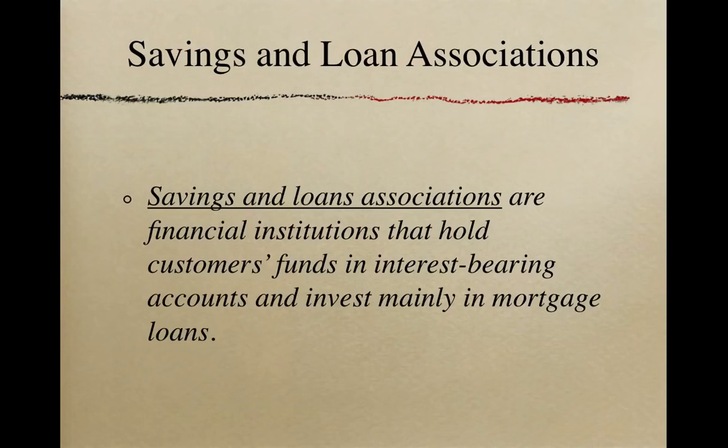In 1982, the government passed new regulations allowing them to charge higher interest rates and offer more services. In the late 1980s, about 20% of the savings and loan associations failed. In response, new regulations were passed. The services offered by savings and loan associations today are very similar to the services offered by commercial banks and credit unions.